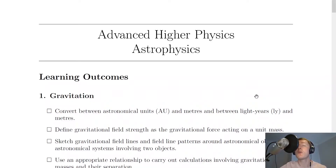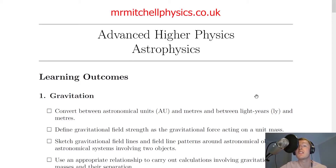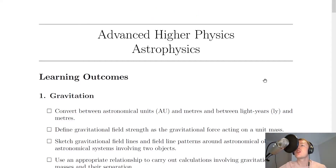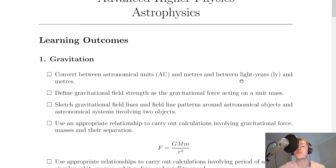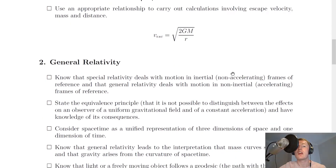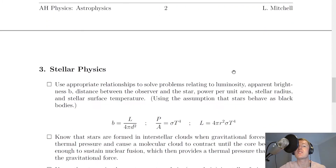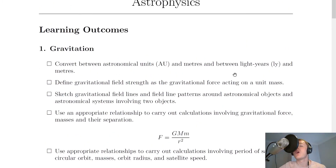Hey guys, how's it going? Mr Mitchell here. In this video we're going to go over exactly what you need to know and be able to do for the astrophysics topic of the Advanced Higher Physics course. Astrophysics is split into three key areas or subtopics called gravitation, general relativity, and stellar physics, and we're going to look through all three parts.